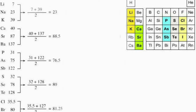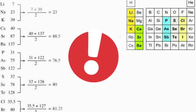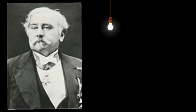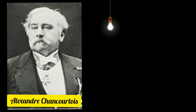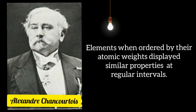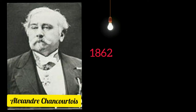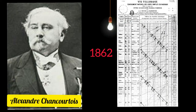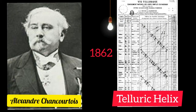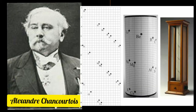But Döbereiner could only find some triads, hence the system was not very useful. French geologist Alexandre Chancourtois noticed that elements, when ordered by their atomic weights, displayed similar properties at regular intervals. In 1862, he devised a three-dimensional chart named the Telluric Helix, with elements arranged in a spiral on a cylinder by order of increasing atomic weight. Chancourtois showed that elements with similar properties lined up vertically.